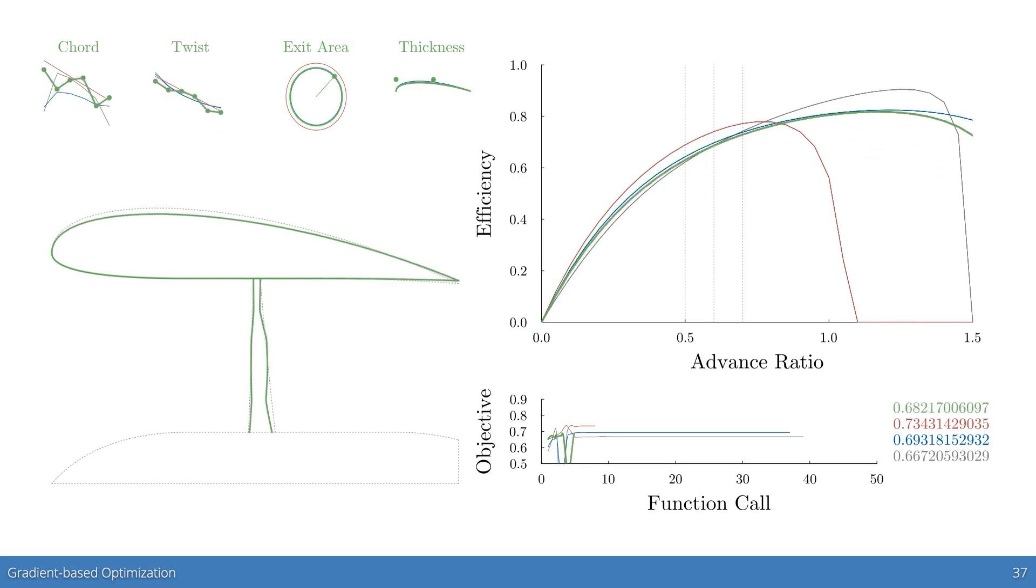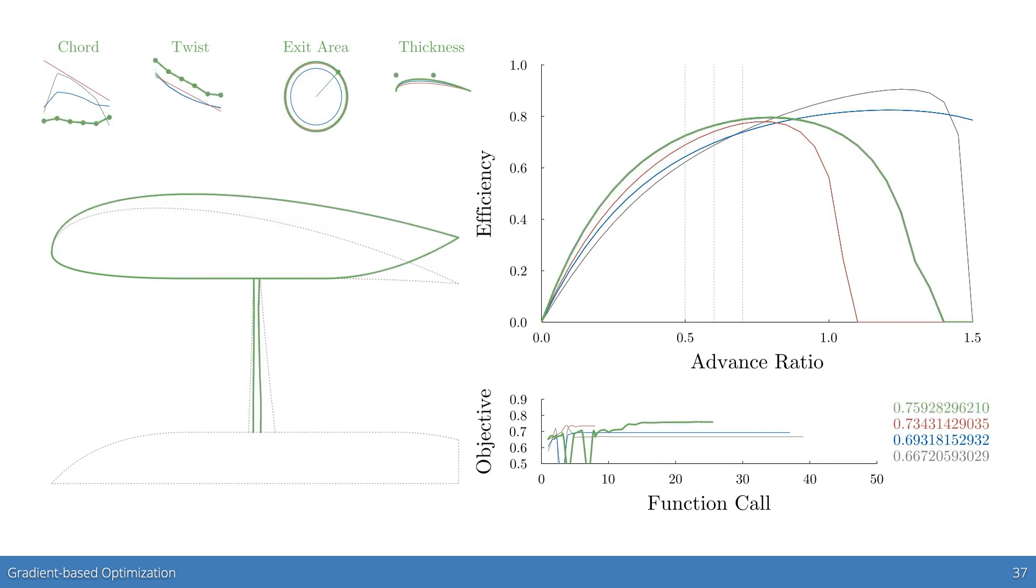Finally, we include both the rotor and duct geometry as design variables. We see that working together, the duct and rotor can achieve an even more optimal design, though in this case especially, there will be some structural concerns with how small the chord values are. In future work, we plan to add structural models and constraints to address that issue.